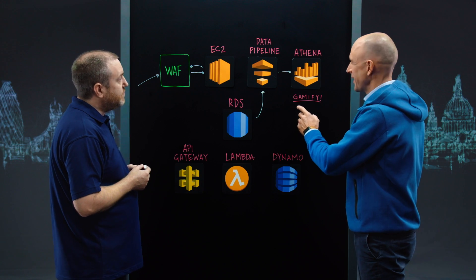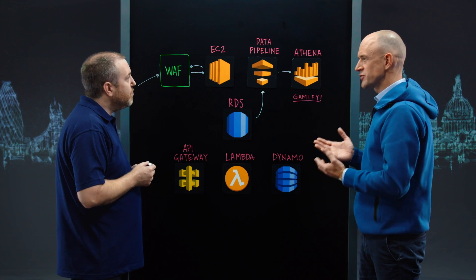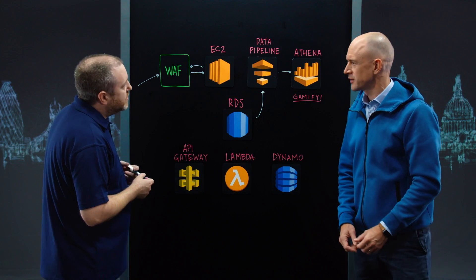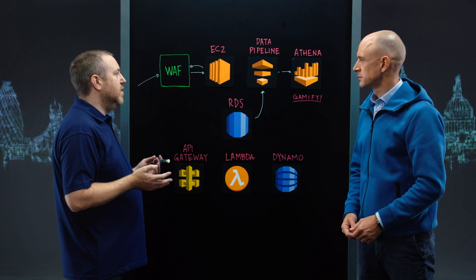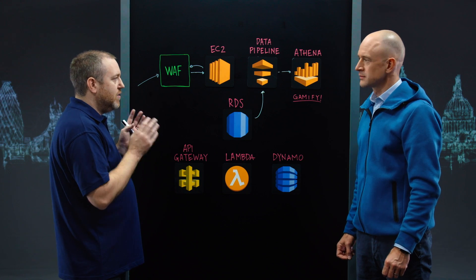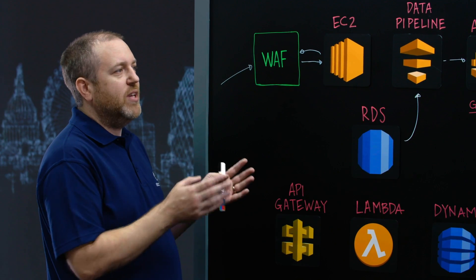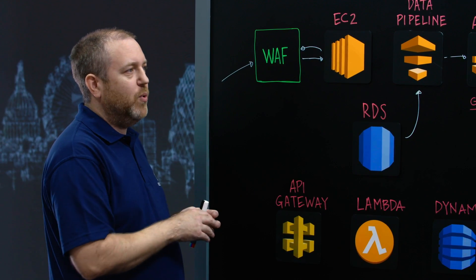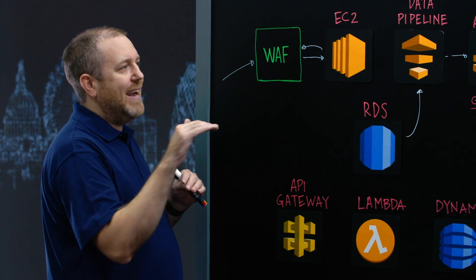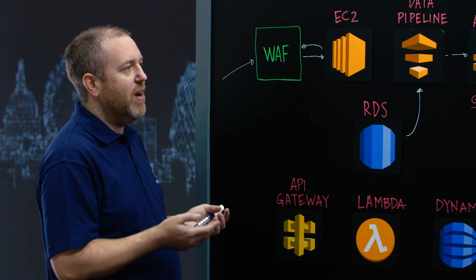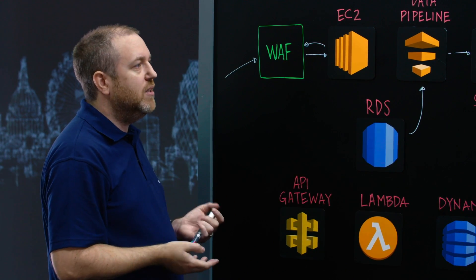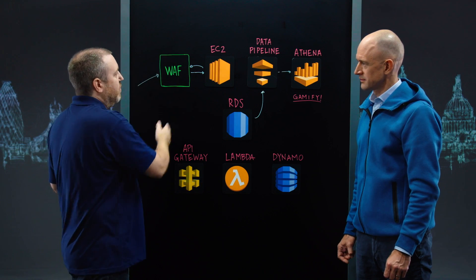We've got the word 'gamify' here. Can you talk about what you're doing with Athena? Rather than the standard run-your-SQL-query-and-block approach, we decided to make up games. Based on these rules, you accrue 10 points; based on these rules, you accrue 100 points. If you reach a thousand points, that means you're illegitimate traffic. We then feed that back through to the WAF manually at the moment, and it gets blocked from the front end completely. So we've got one, two, and then a third layer of security to filter out unwanted users.